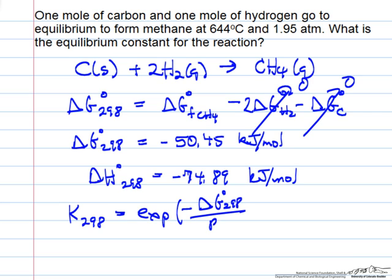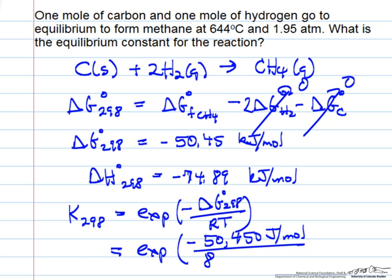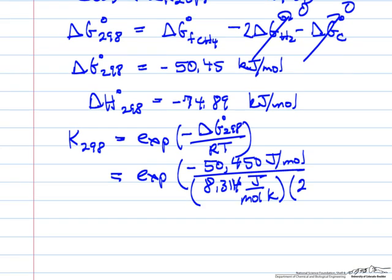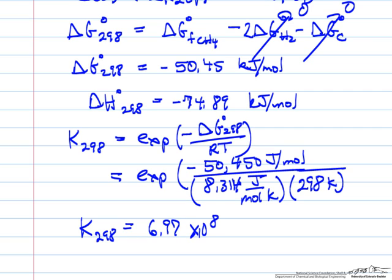The equilibrium constant at 298K is calculated from the free energy change at 298K over RT. We want to be careful with units, so I'll write this as joules per mole and use 8.314 joules per mole per Kelvin for the gas constant, and 298 for the absolute temperature. So the equilibrium constant at 298K is a large number: 6.97 times 10 to the eighth.